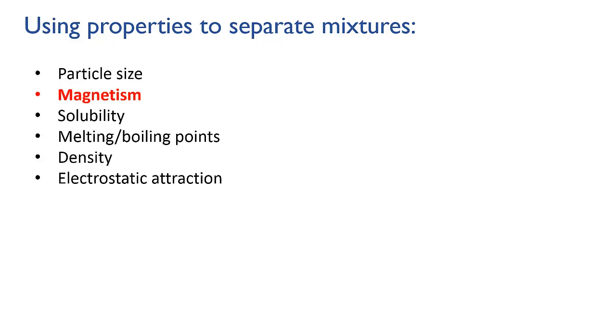Magnetism is another useful property for separating things. If one of the components of your mixture is magnetic, a magnet can be used to attract it away from the other components.